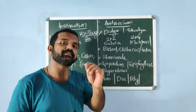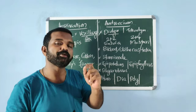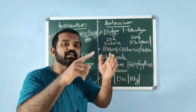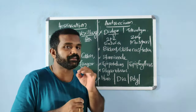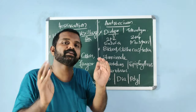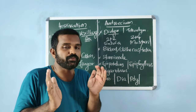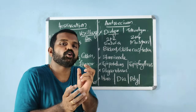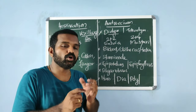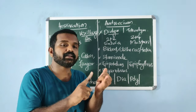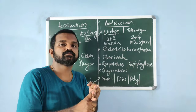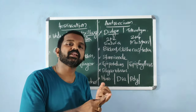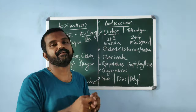Vexillary aestivation is characteristic of papilionaceous corolla. Here, a posterior largest petal is known as the standard petal, the two lateral petals are called wing petals, and the two anterior small petals are called keel petals. This can also be termed vexillum, alae, and carina.